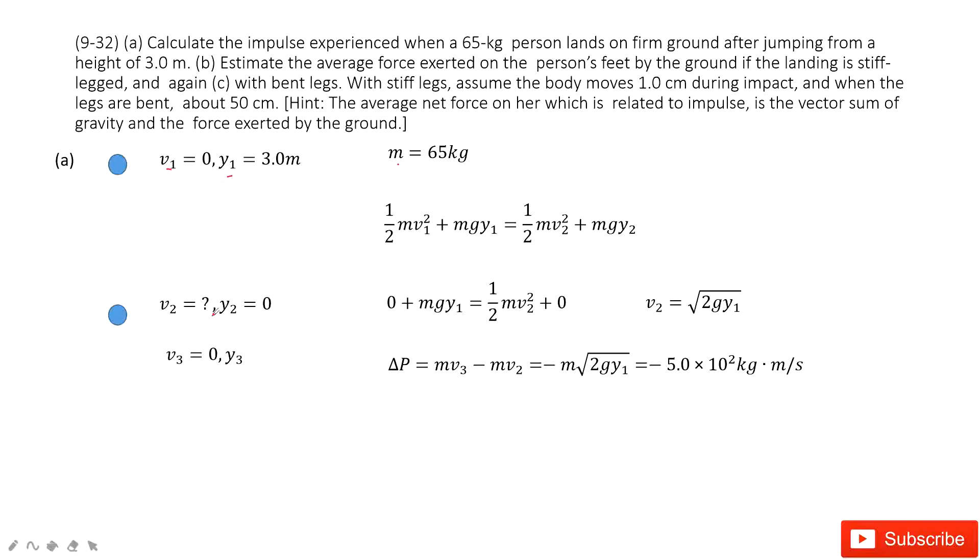Then this person just landed on the ground, right? We need to find the velocity when they hit the ground. We don't know, and the position is 0. It just landed on the ground.